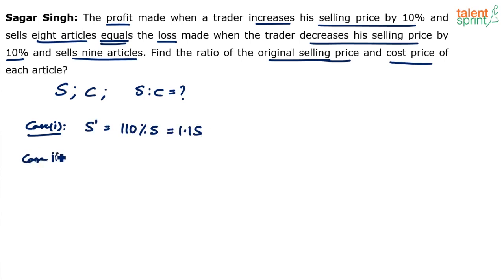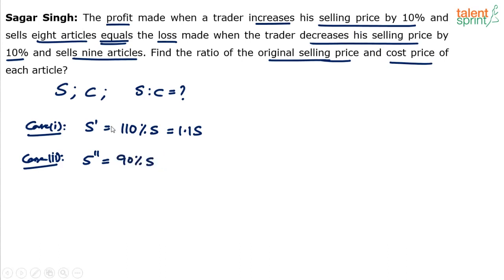In case 2, the selling price is decreased by 10%, so it becomes 90% of the original selling price. In case 1, the selling price becomes 1.1S. In case 2, the selling price is reduced by 10%, so the new selling price comes out to be 90% of S, which is 0.9S. You don't have to do all this case labeling in the exam — I'm just explaining it neatly so you can follow easily.